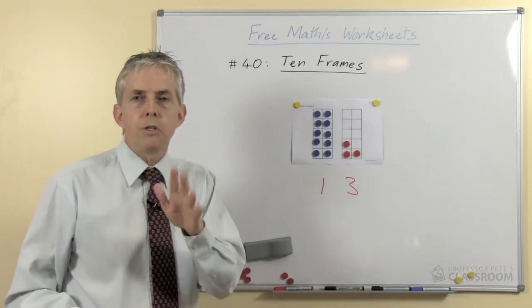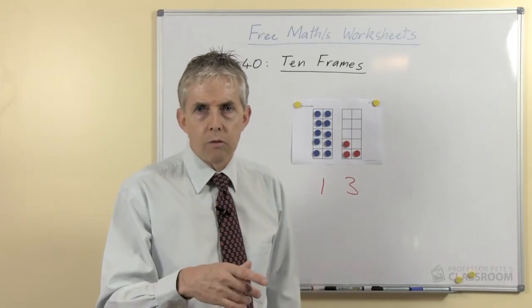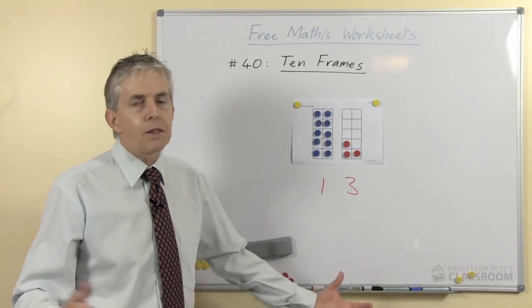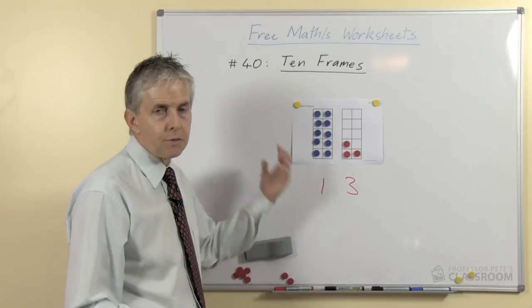If you say to a child I want you to write down the number fourteen, before you've even said teen they've probably written the four already. Thirteen is difficult because it doesn't say three, it would be helpful if it was called three teen, but of course it's not, it's thirteen.